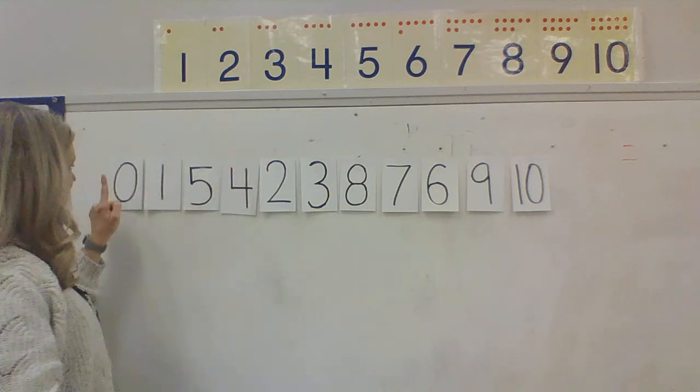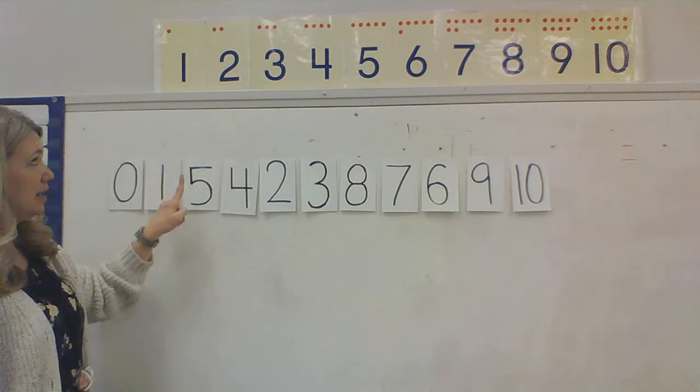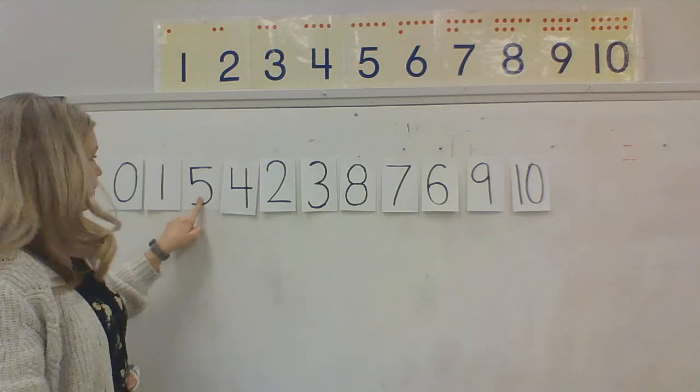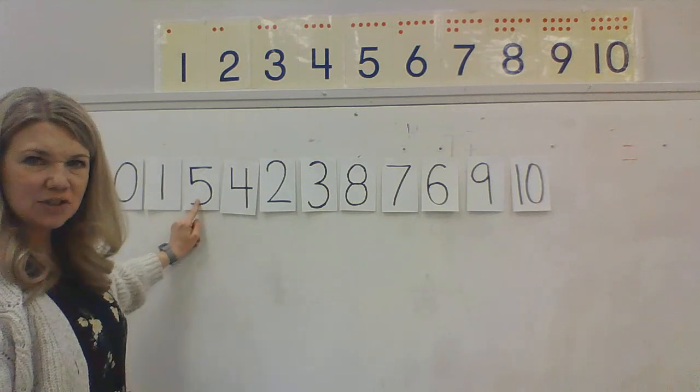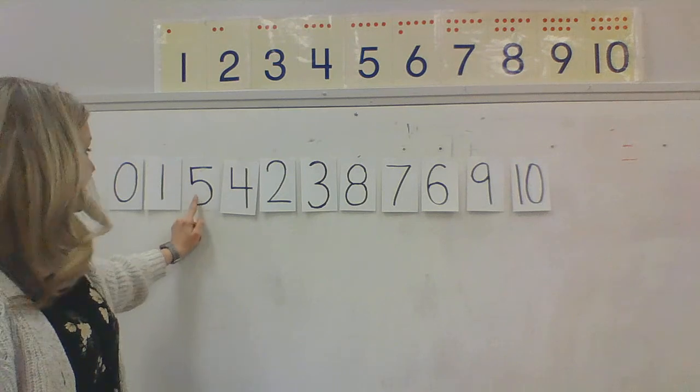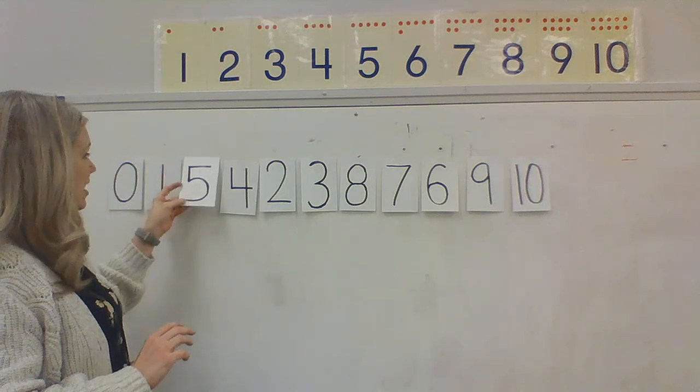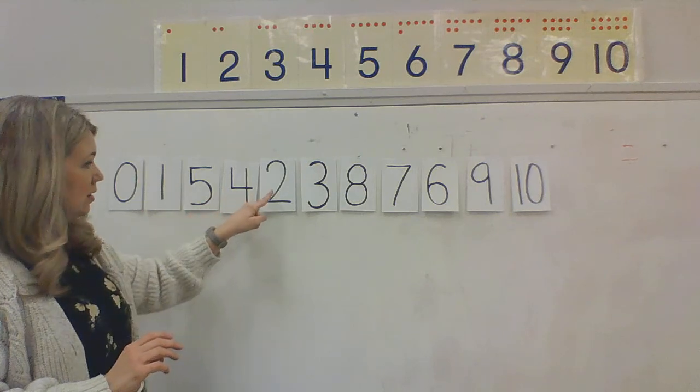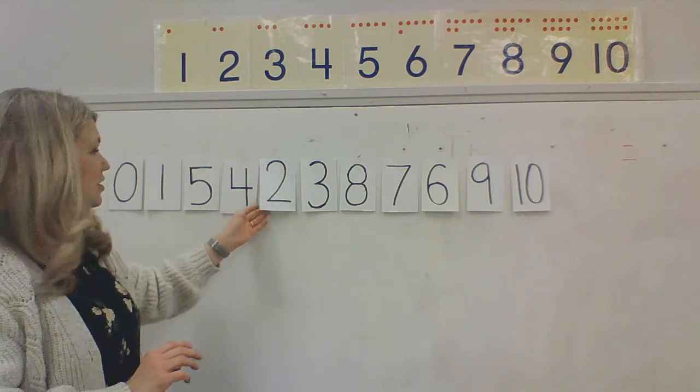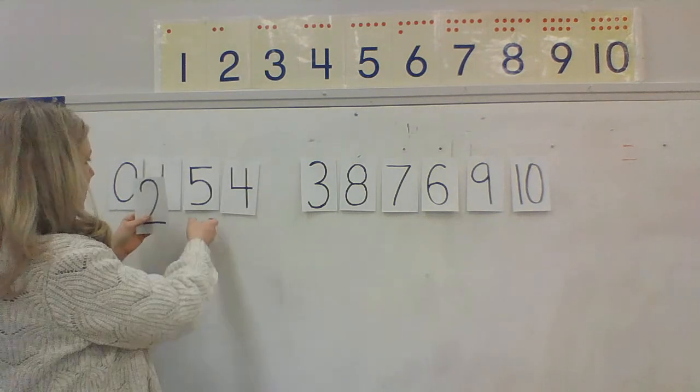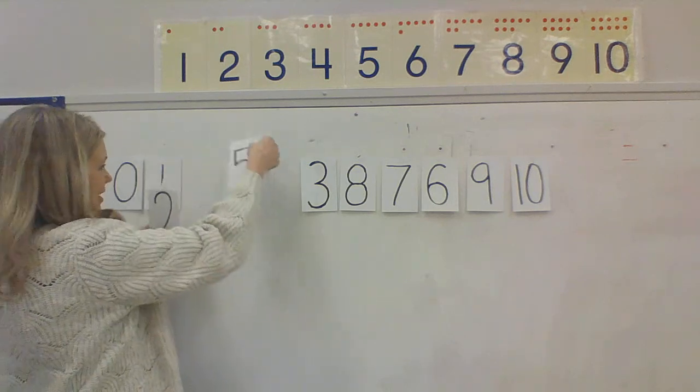So we have 0, 1, 2. Ooh, is that the number 2? No, this is the number 5. The number 5 does not go there. Do you see the number 2? There is the number 2. Let's move it back where it needs to be.